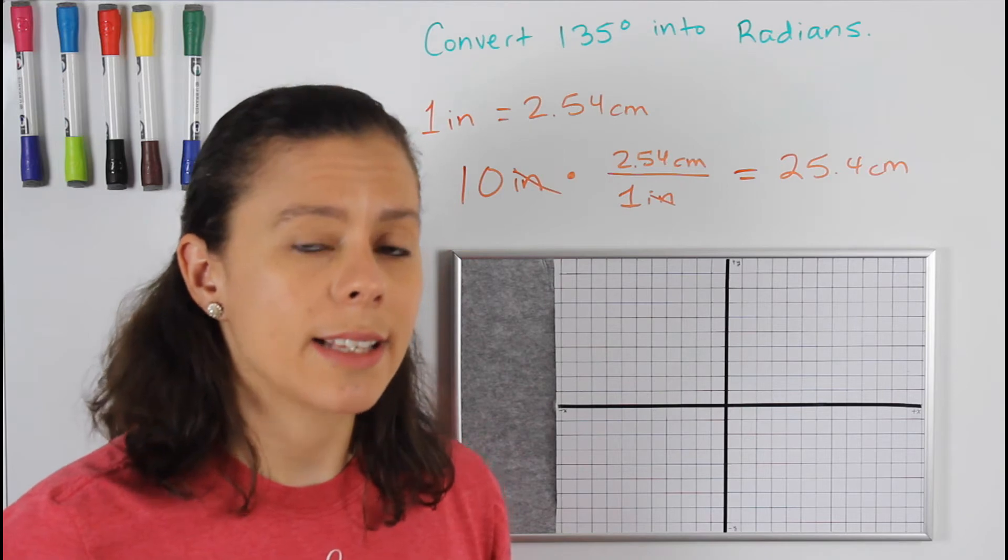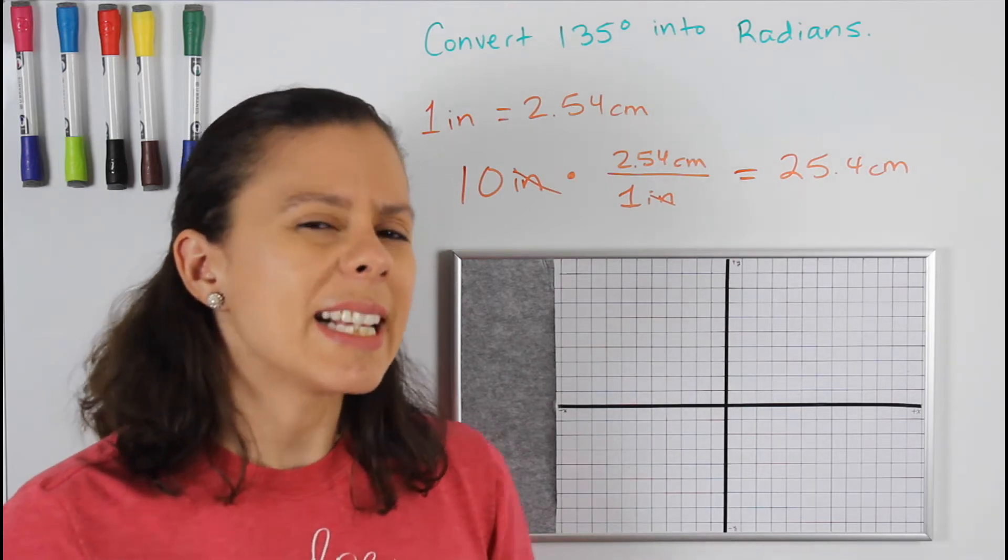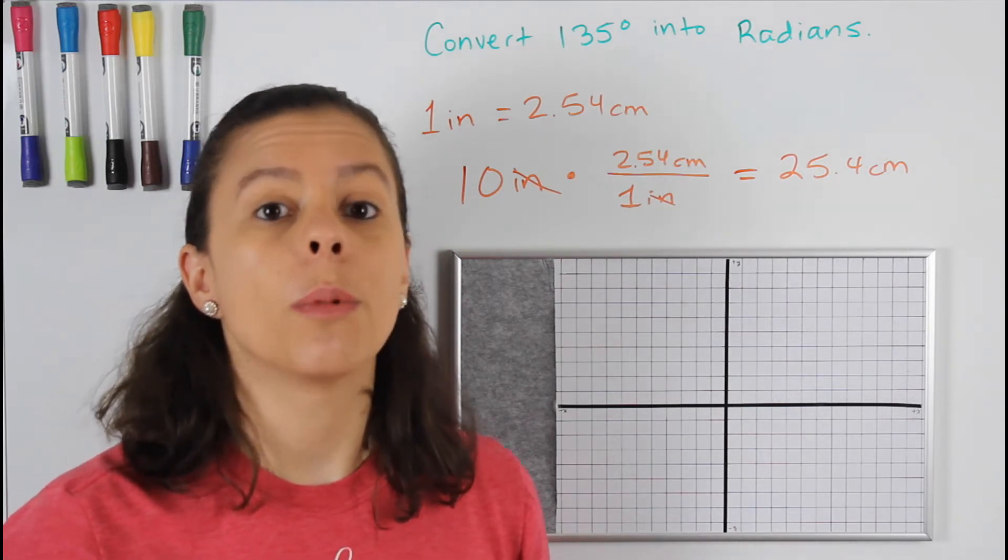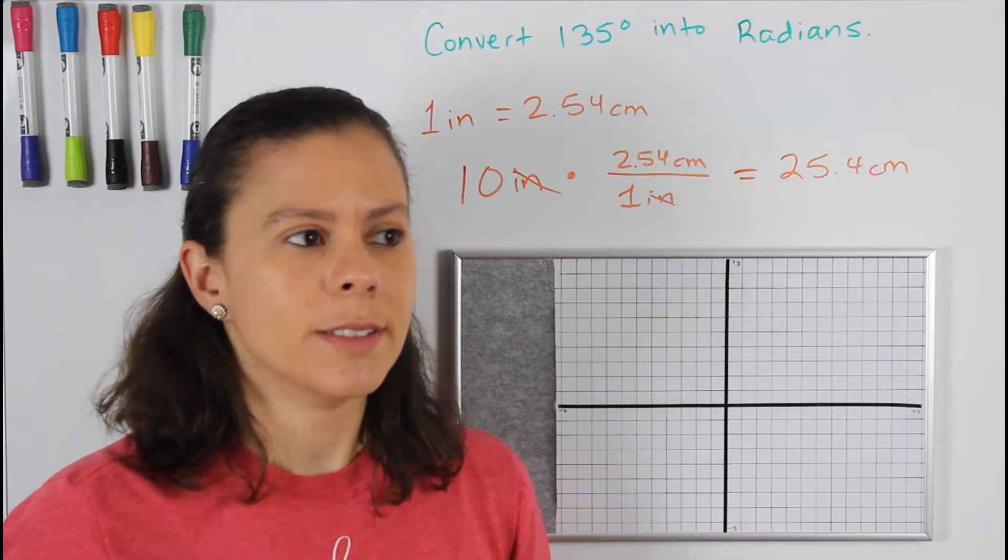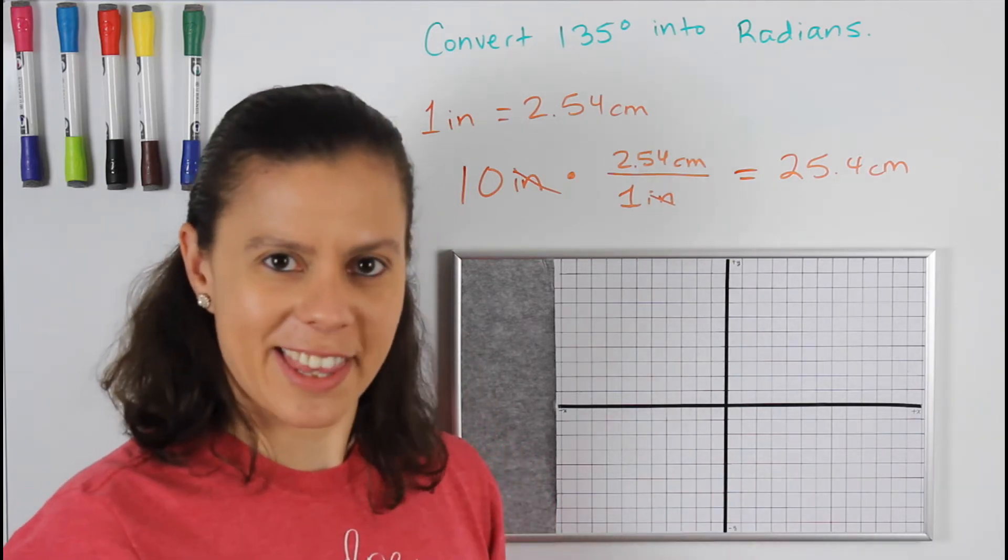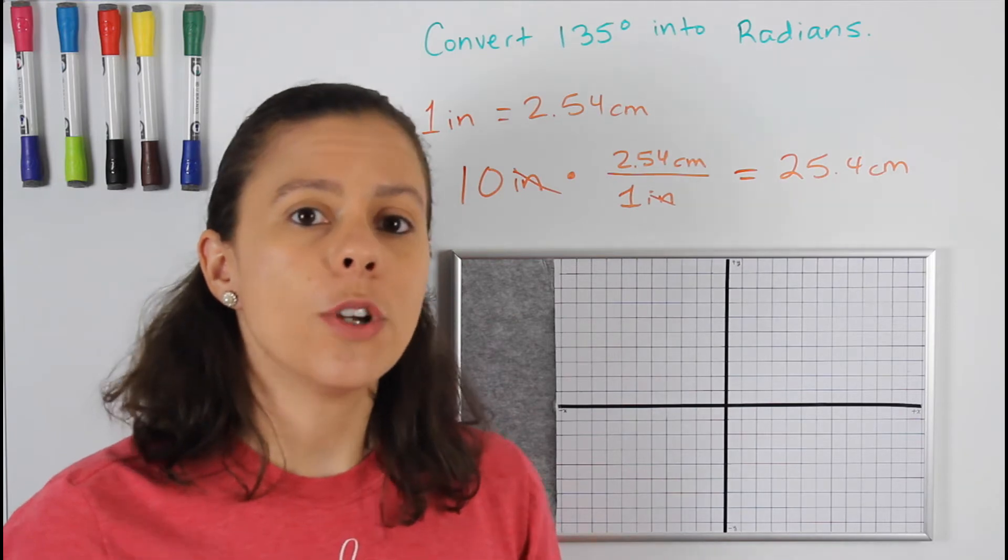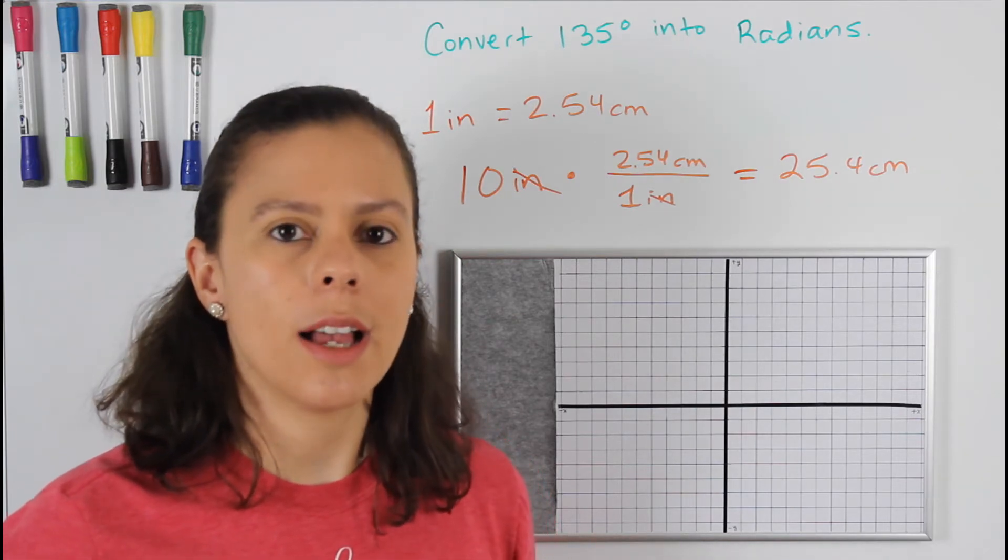Now when we're talking about radians and degrees, it's a little bit different because we use the term pi, which is an irrational number—let's just leave it at that. It confuses students a lot because we're like, what do I do with this number?